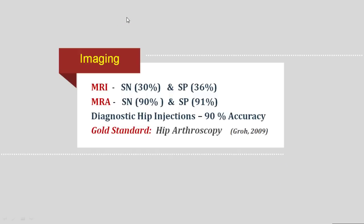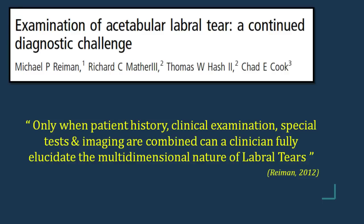What are the imaging options? Common options used are MRI or MR arthrography. The gold standard is hip arthroscopy. The sensitivity of standard MRI is quite low, so it might miss most tears, whereas MR arthrography has higher sensitivity. Some orthopedic surgeons also use diagnostic hip injections to help identify whether the source is articular or extra-articular. Diagnosing labral tears is a challenge — no single test can pinpoint it on its own, so a combination of history, clinical examination, special tests, and imaging all needs to be combined before concluding it is a labral tear.